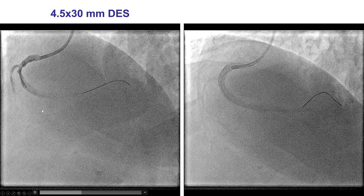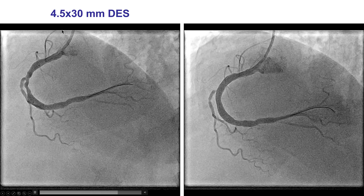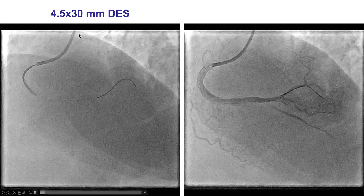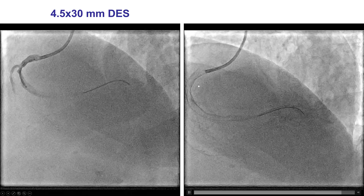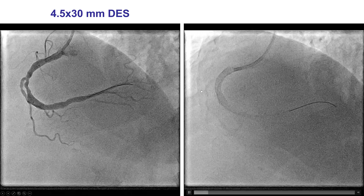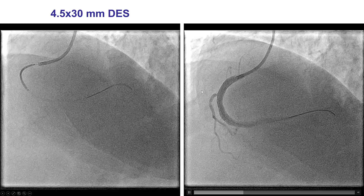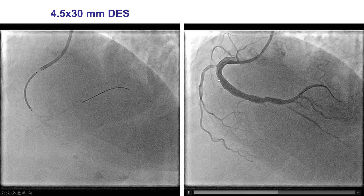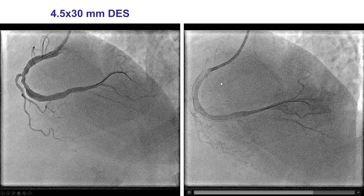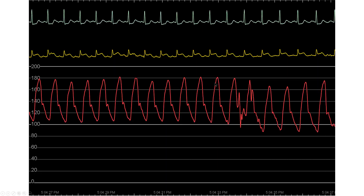about 4.5 millimeters in diameter, with a significant lesion in the mid-segment with a large volume of plaque. We placed a 4.5 by 30-millimeter drug-eluting stent that provided a nice result. However, despite that, we continued to have ST-segment elevation and reciprocal ST-segment depression.